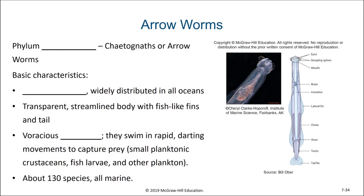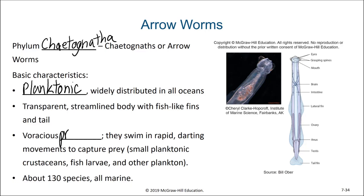Our next group of worms are found primarily within the plankton. They are fish-like worms known as arrow worms or chaetognaths, from phylum Chaetognatha. Their basic characteristics are that they are planktonic and widely distributed in all oceans. They have transparent streamlined bodies with fish-like fins and a tail. They are voracious predators that swim rapidly and feed on small planktonic crustaceans, fish larvae, and other plankton. There are about 130 recognized species, all of which are marine.